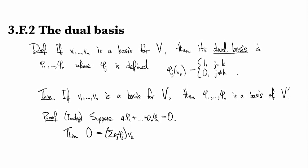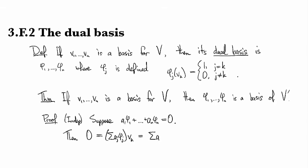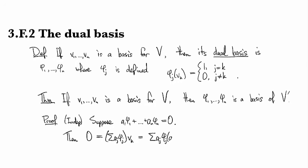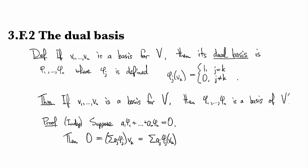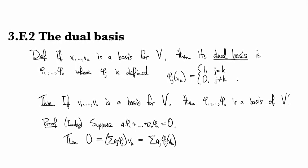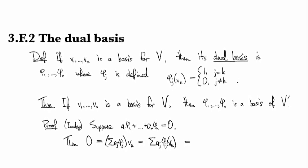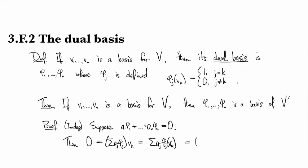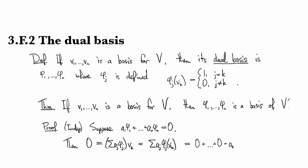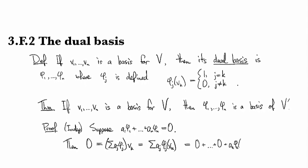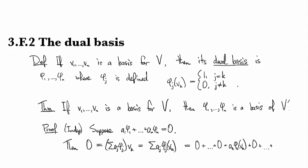So then I can use the definition of a sum of linear maps to say that this is sum aj vj of vk. And then I can use the definition of vj to say that this is going to be—well, let's see, it's going to be 0 everywhere where they don't match. So I can imagine there'll be a bunch of zeros, and then there'll be ak, that's the one where j equals k, and then everywhere else will be zeros again.